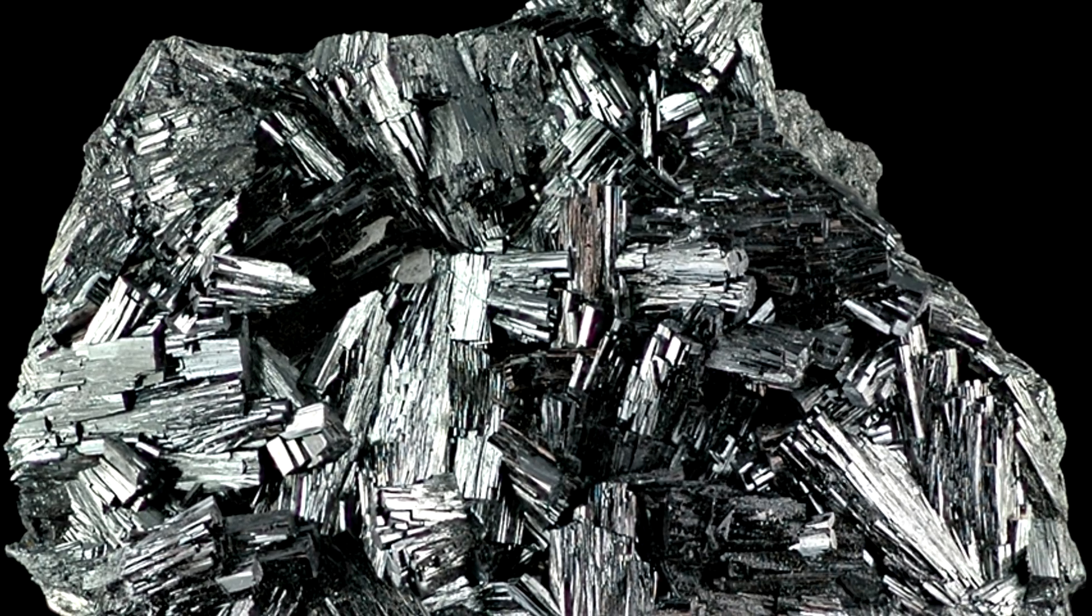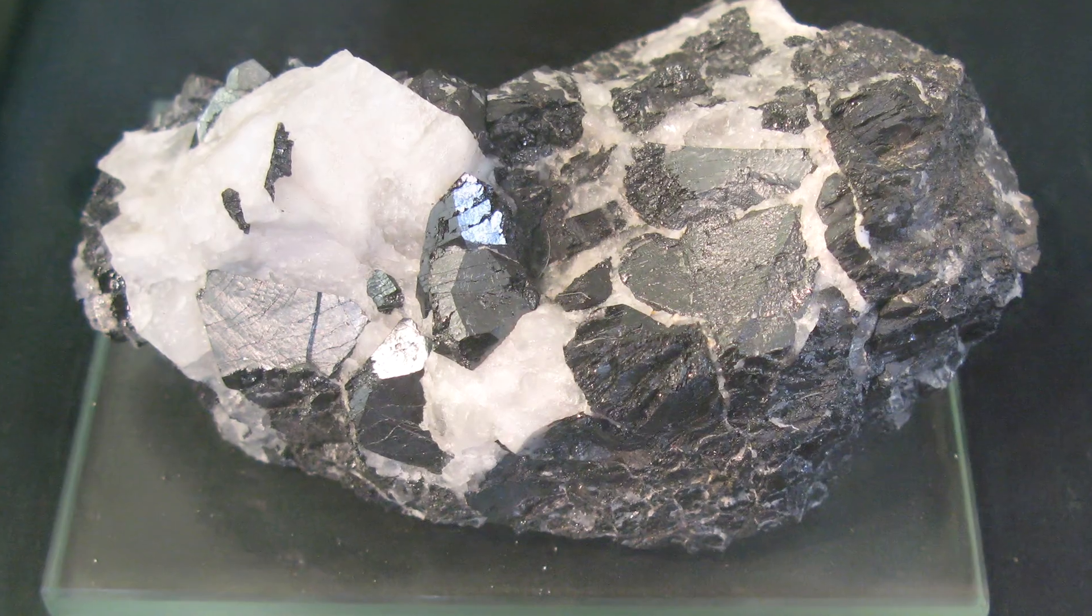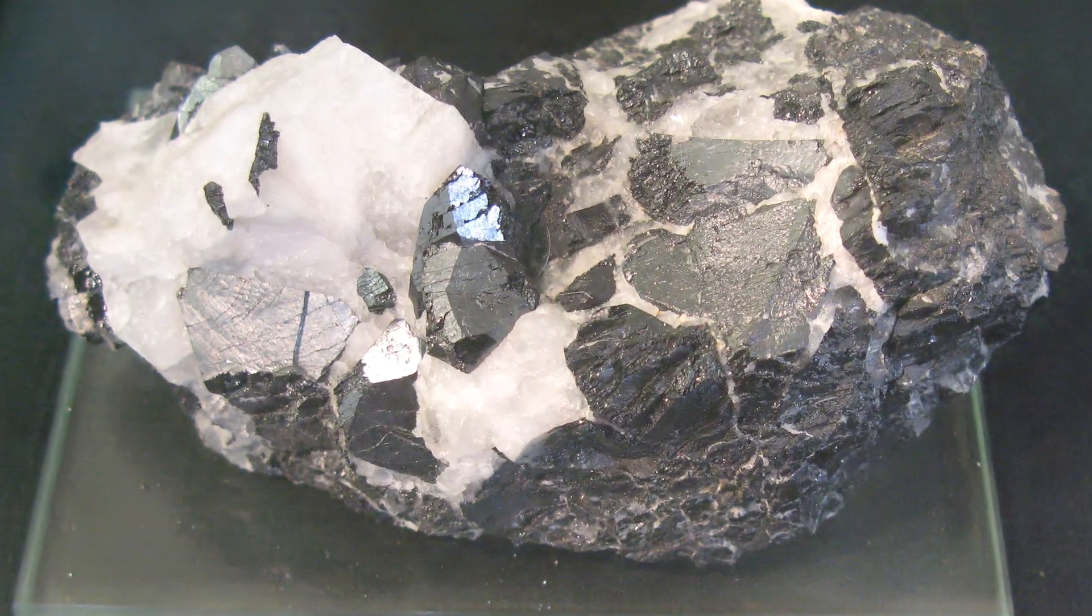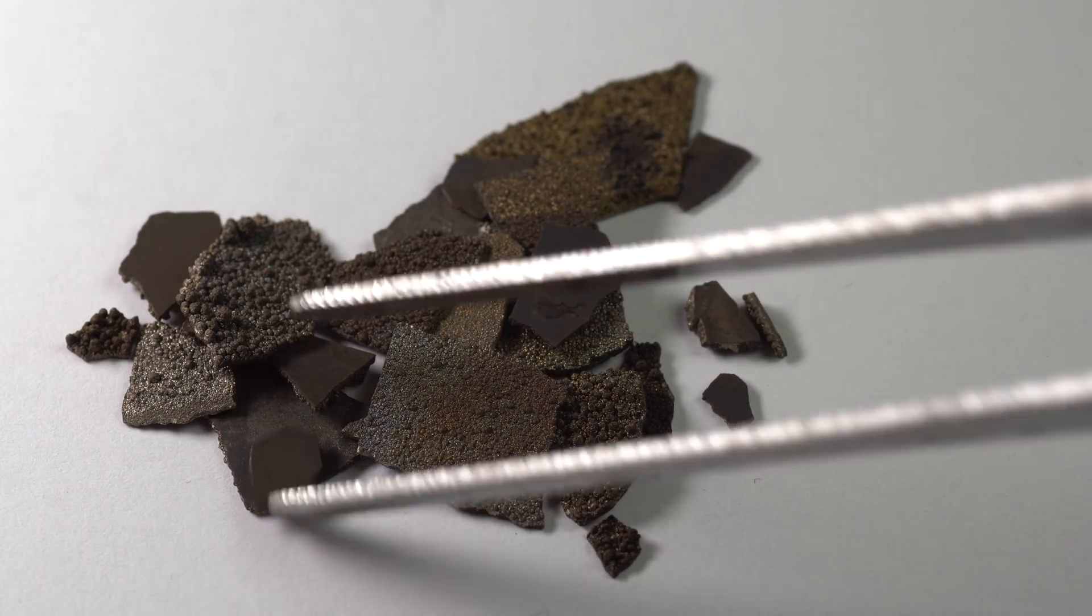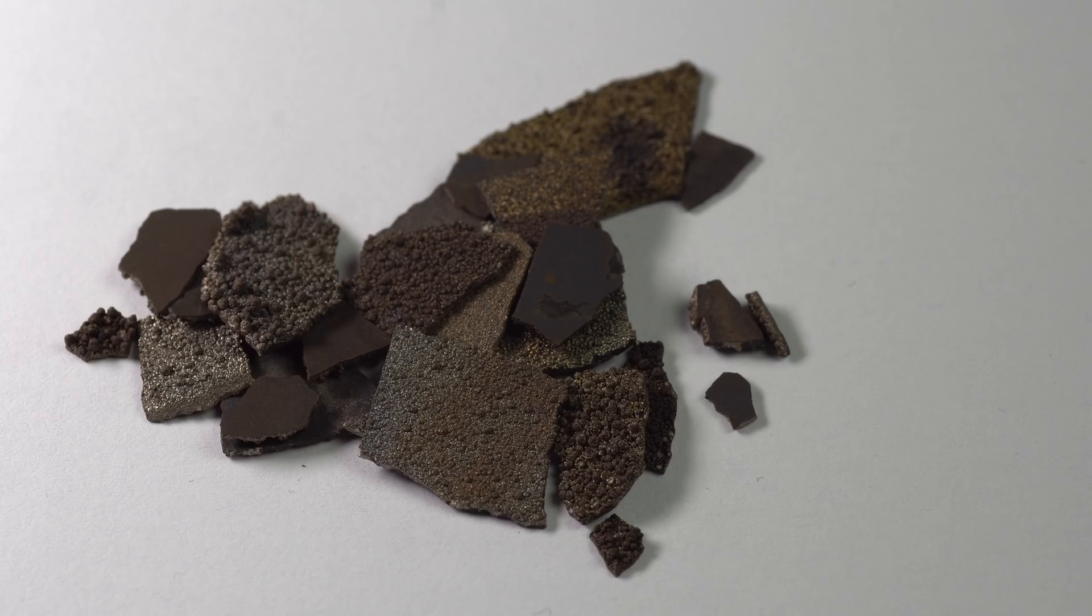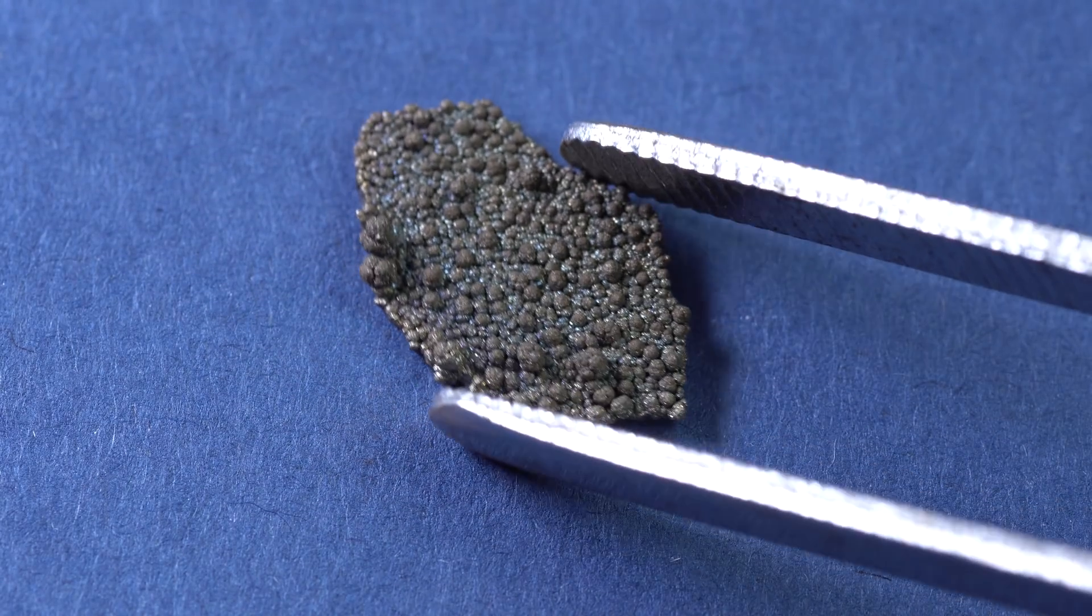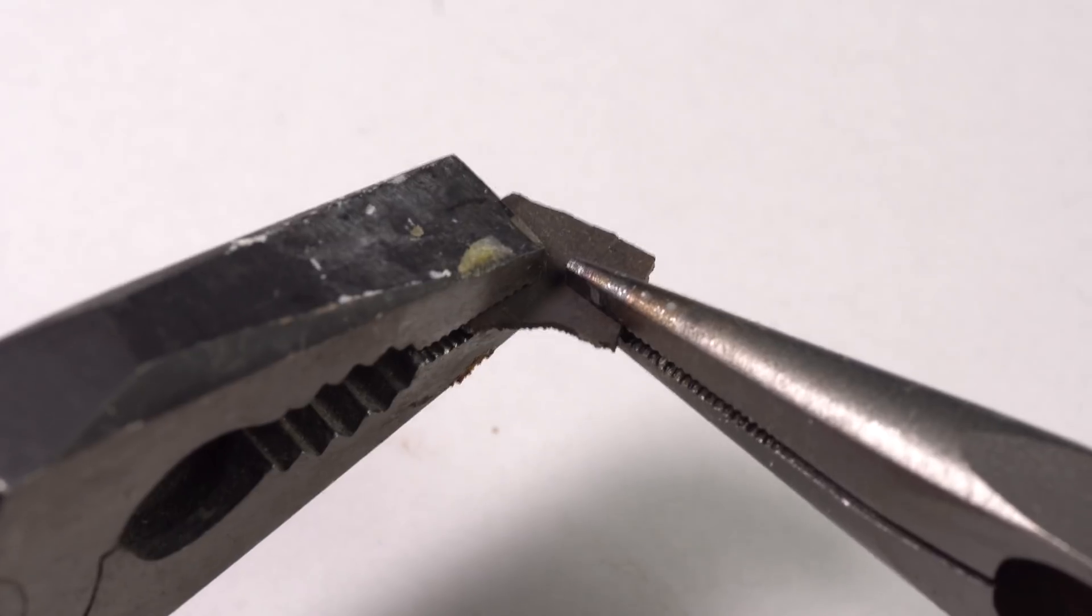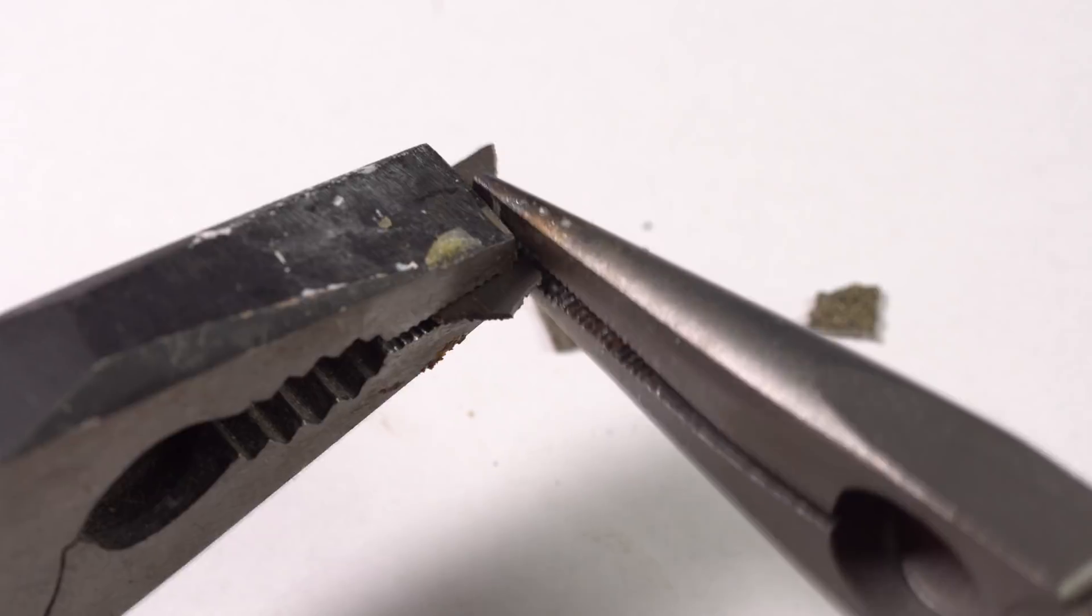In nature, manganese is present in the composition of minerals pyrolusite, manganese dioxide, and braunite. Metallic manganese derived from these minerals does not particularly look like a metal, all because of the layer of manganese dioxide covering the metal pieces. Pure manganese is quite fragile and breaks easily with little effort.